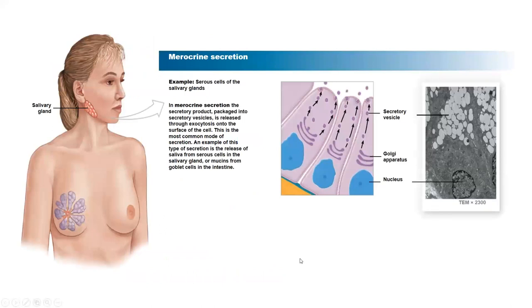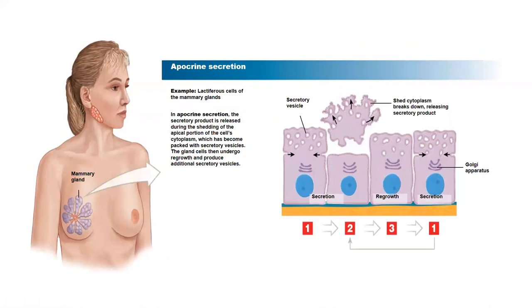Looking at an illustration: merocrine secretion is seen in the salivary gland and the goblet cell. There's a cell with vesicles containing secretions — whether salivary secretions or mucin in the case of the goblet cell — and those secretions are exocytosed out of the cell. This mechanism preserves all parts of the cell. In apocrine secretion, the apical part of the cell is ruptured off. Vesicles move toward the topmost part of the cell, while the nucleus and other organelles remain at the bottom.